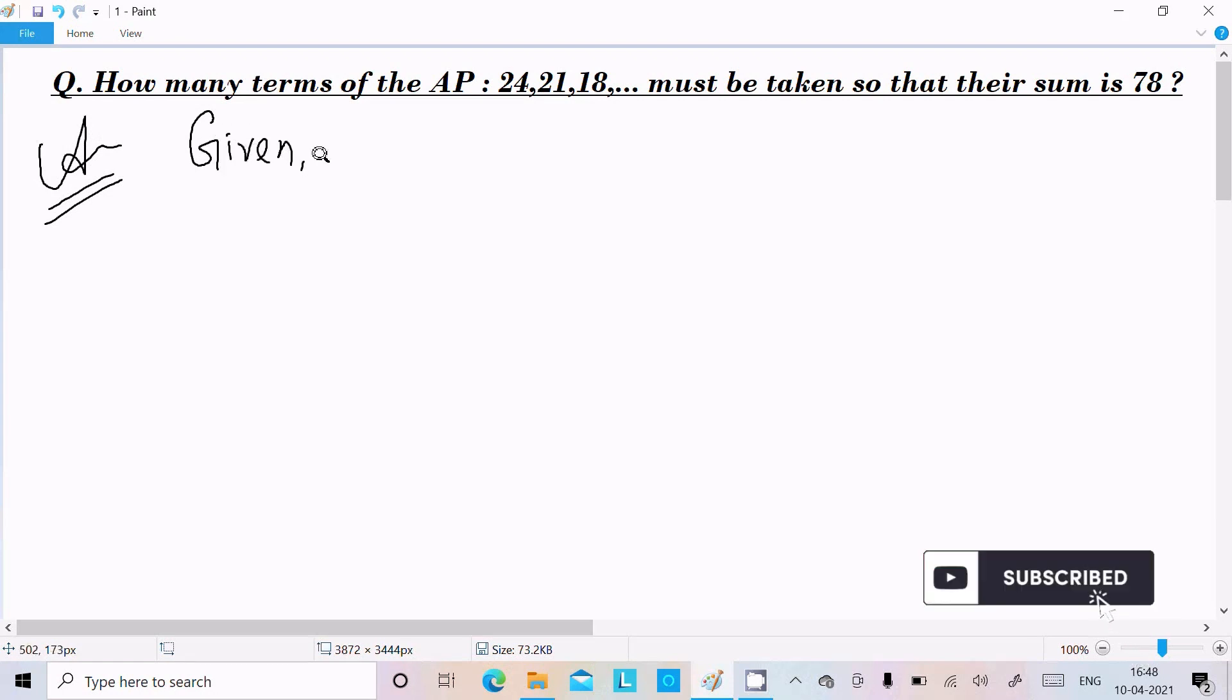Given AP is 24, 21, 18, and this continues on. Here, a is the first term, so the first term is 24. d is the common difference. Calculating: 21 minus 24, or 18 minus 21, you get d value minus 3.